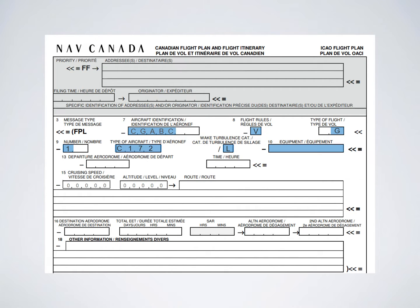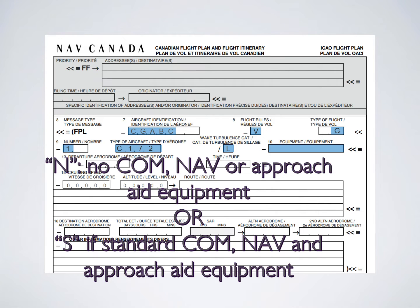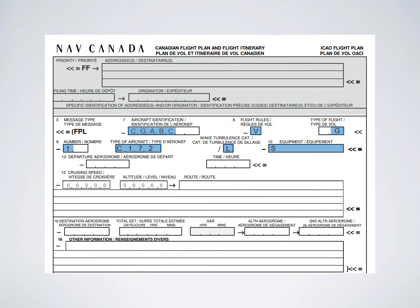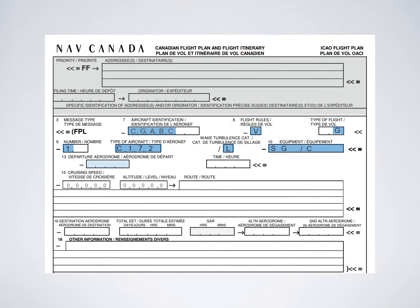Equipment codes can be a little overwhelming, but the gist is they want to know what you have on board. If you have no comm, nav, or approach aid equipment, put N. If you're flying a flight school plane, you probably have a comm unit, a nav unit, and some sort of approach aid equipment, so put S in the first part of the box. If you have a GPS on board and know how to use it, you can include it in the equipment codes as well.